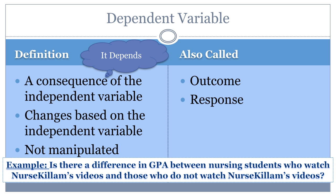In our example, the two variables are GPA and watching Nurse Killam's videos. It would not make sense for an increased GPA to cause students to watch the videos. However, watching the videos may cause an increase in students' GPA. Therefore, the dependent variable in our example is the GPA. The one that is assumed to cause the change in the GPA is the independent variable. Even though a higher GPA may be assumed to be a result of watching Nurse Killam's videos, a causal relationship between the two variables cannot necessarily be proven.